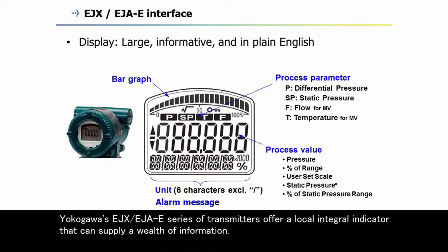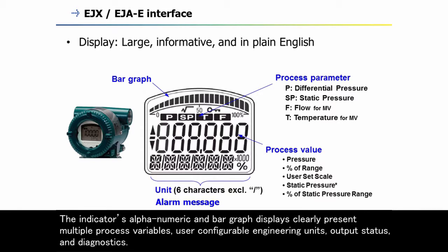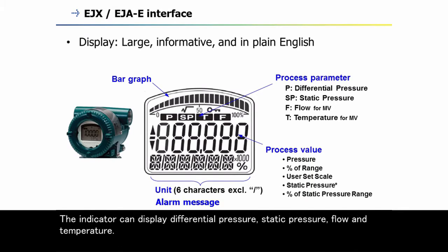Yokogawa's EJX or EJAE series of transmitters offer a local integral indicator that can supply a wealth of information. The indicator's alphanumeric and bar graph displays clearly present multiple process variables, configurable engineering units, output status, and diagnostics. The indicator can display differential pressure, static pressure, flow, and temperature. Descriptive alarm messages display abnormalities clearly to simplify troubleshooting.